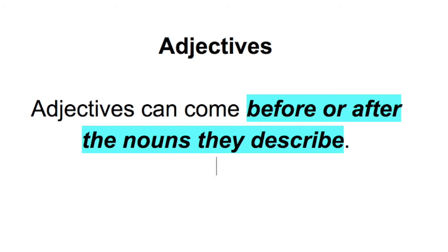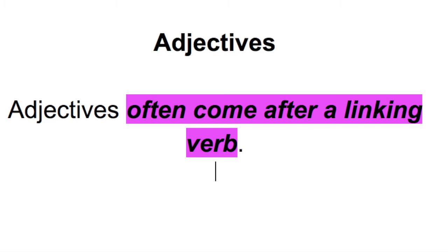Rule number three: adjectives can come before or after the nouns they describe. And our final rule for today — one that we actually talked about last week as well — adjectives often come after a linking verb.